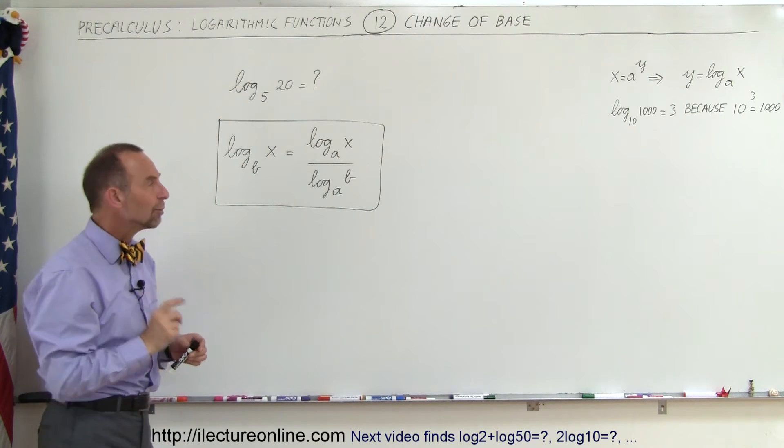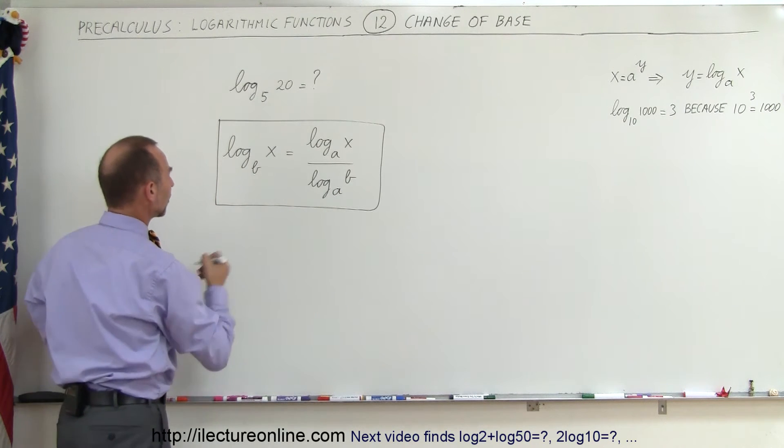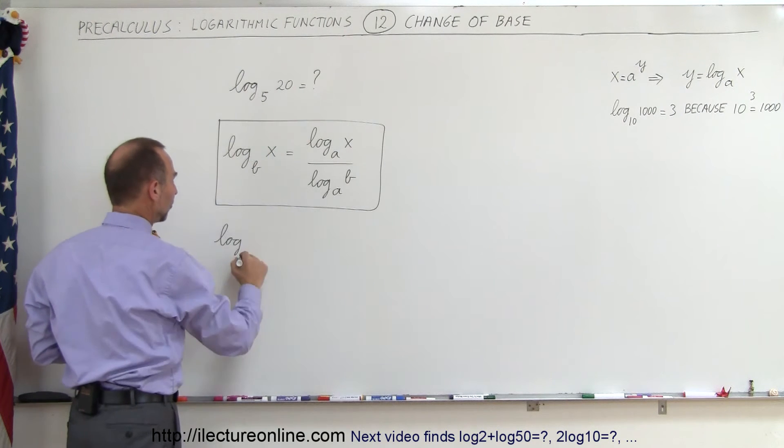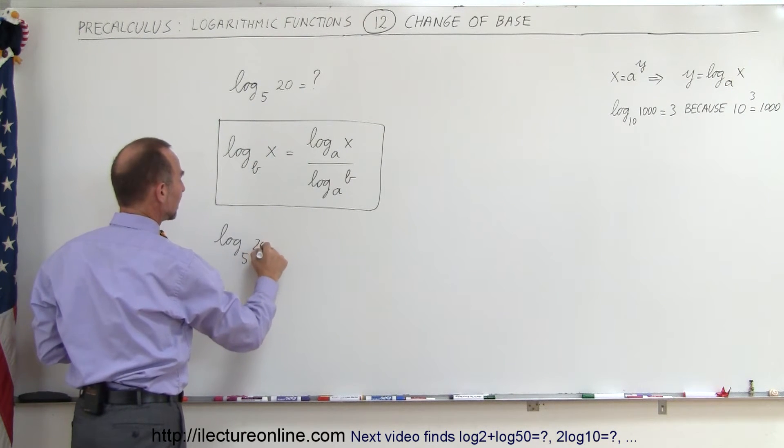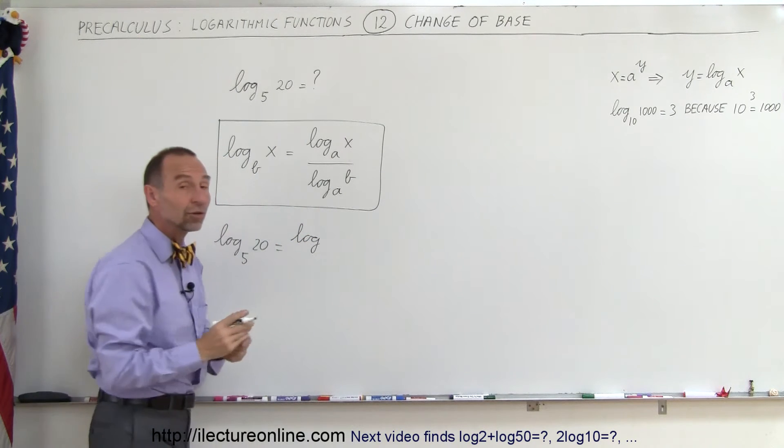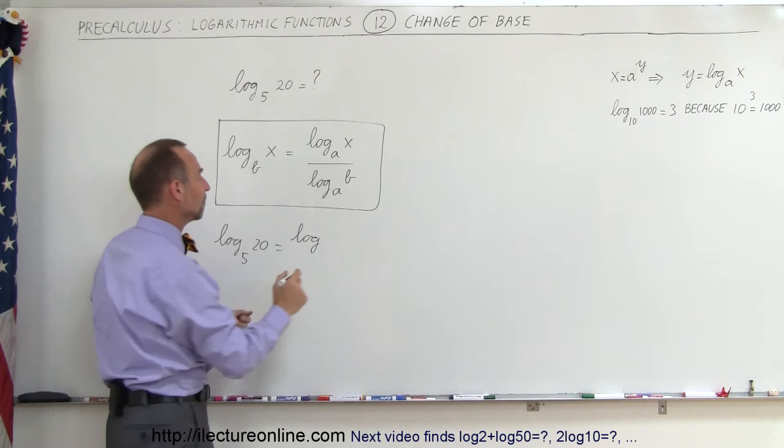So let's apply that and see if we can solve this problem now. What we're going to do is say the log of base B, which is 5, of the number 20 is equal to the log, and let's go to the base 10 because your calculator can calculate the log of base 10.